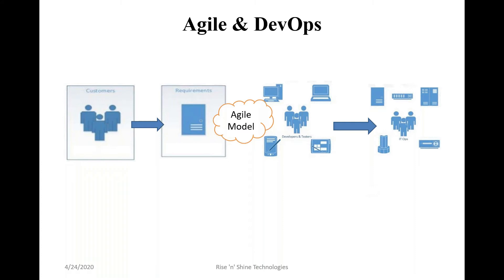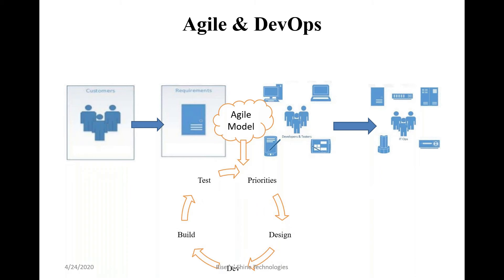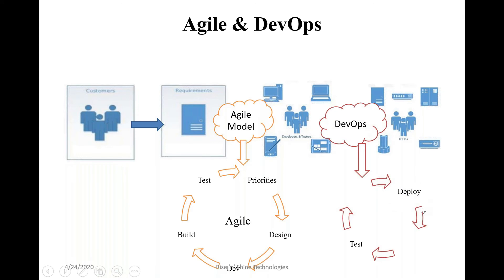Combining Agile and DevOps: Agile is helping with continuous integration from the developer's point of view — prioritize, design, develop, build, test, and confirm integration. Once continuous integration is completed, DevOps handles how fast you deliver to the remaining environments — deployed, tested, deployed, tested. The main five activities to remember: continuous integration, continuous delivery, continuous deployment, continuous monitoring, and continuous testing.